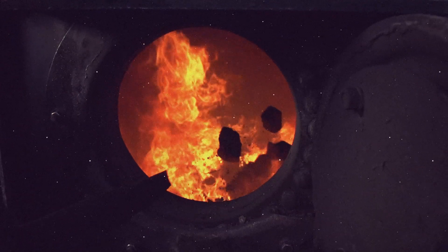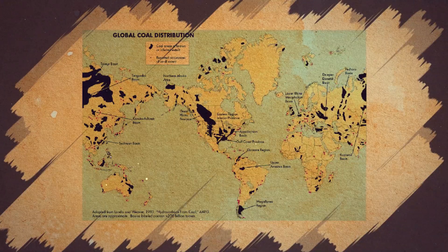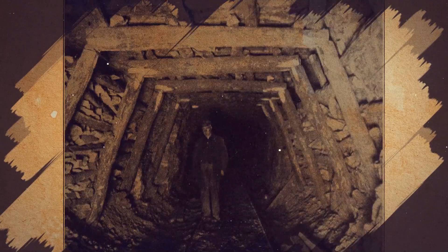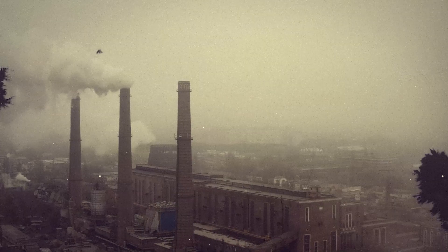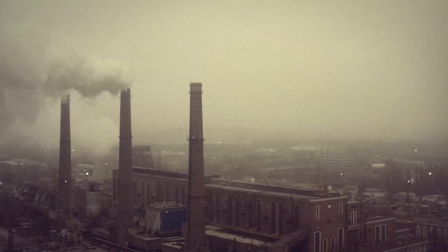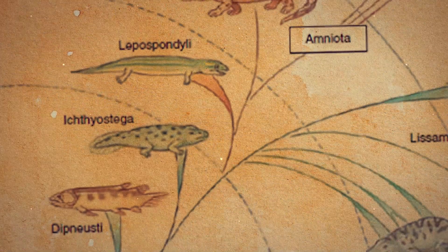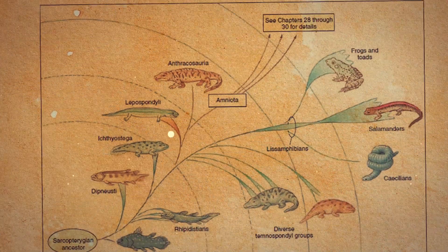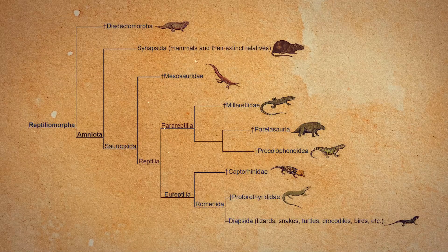The Carboniferous period left a lasting legacy that continues to influence our world today. The vast coal deposits formed during this time have been a crucial energy source for human civilization, powering us through the industrial revolution and continuing to be a significant, if controversial, part of the energy mix today. The evolutionary developments that occurred during the Carboniferous set the stage for the dominance of reptiles in the subsequent Permian and Mesozoic eras. The first amniotes that appeared in the Carboniferous were the ancestors of all reptiles, birds, and mammals.